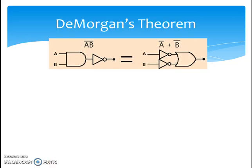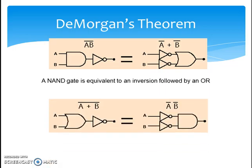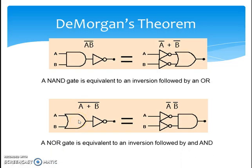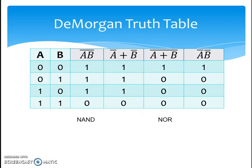There is a very important theorem known as De Morgan's theorem. It states that the complement of the AND equals the sum of the individual complements — in other words, a NAND gate is equivalent to inversion followed by an OR gate: A dot B bar equals A bar plus B bar. Another version in terms of the NOR gate states that the complement of the OR equals the AND of individual complements, so a NOR gate is equivalent to inversion followed by an AND gate. This is illustrated in De Morgan's truth table.